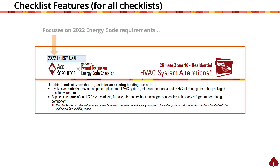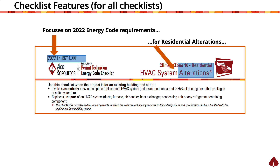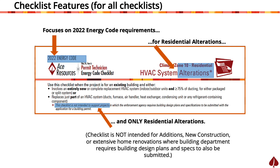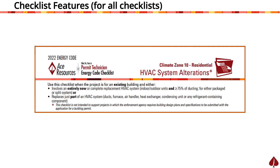These alteration projects involve only the existing home — for example, a simple re-roof or water heater change-out. Because the Energy Code has different requirements for additions and new construction, these checklists should not be used for those types of projects. Additionally, these checklists should not be used for extensive renovations of an existing home or any projects requiring additional submission of design drawings.